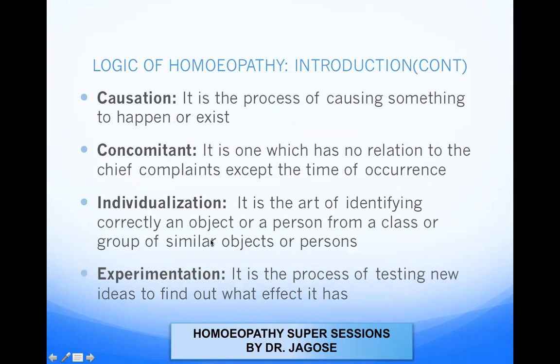Causation is a process of causing something to happen or exist. Concomitant is one which has no relation to the chief complaint except the time of occurrence. Individualization is the art of correctly identifying an object or person from a class or group of similar objects or persons. For example, in a class of 100 people, 99 are wearing a white apron but one is wearing a black coat — that person stands out and is easily identified.